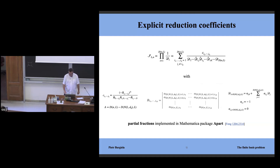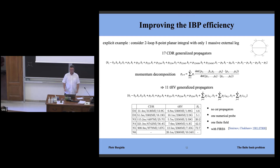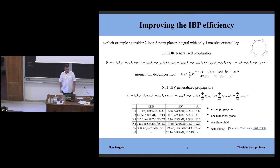Having an upper bound on generalized propagators at each loop order is useful in two ways: it reduces the complexity of IBP reduction — relating all integrals in a topology to a small set of master integrals — and, since the master integral count depends on how many denominators you define, using fewer denominators (e.g., 11 instead of 17 at two-loop eight-point) reduces the system. This trick is also used in six-point approaches today.